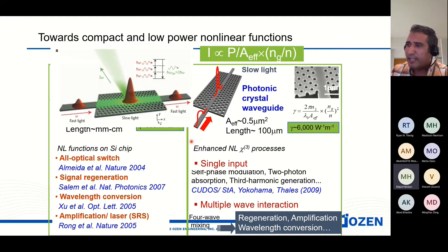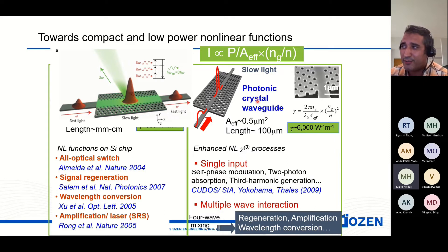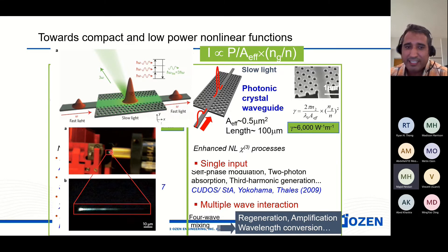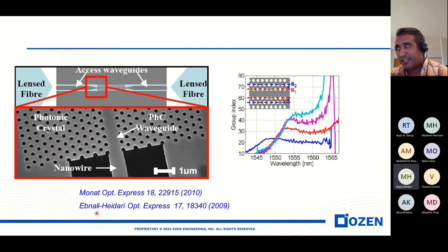For just 80 micrometers of photonic crystal waveguide, we can see green light emission in the silicon waveguide. This is an experimental result — the green light emission shows how an 80 micrometer silicon waveguide can be used to create third harmonic generation. You give light at 1.55 micrometers and you see green light emission because of the third harmonic generation.